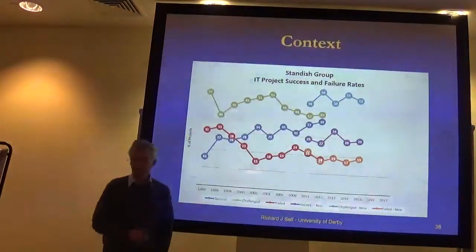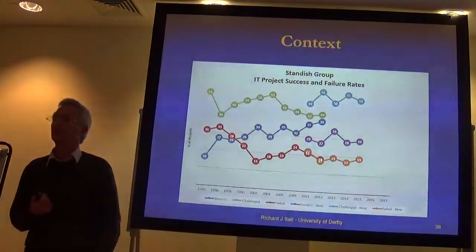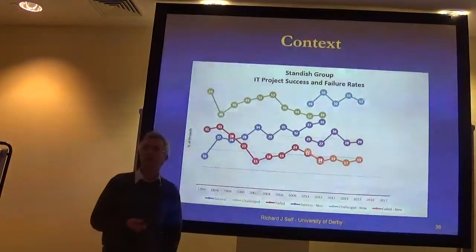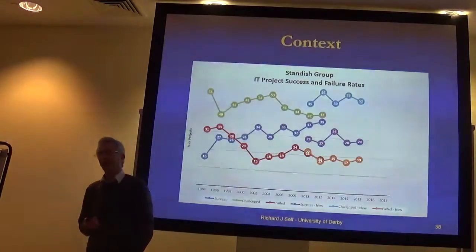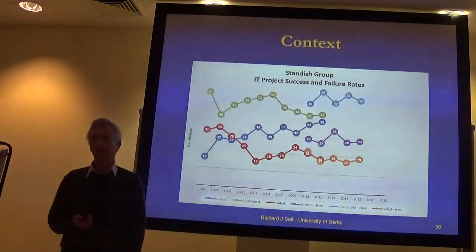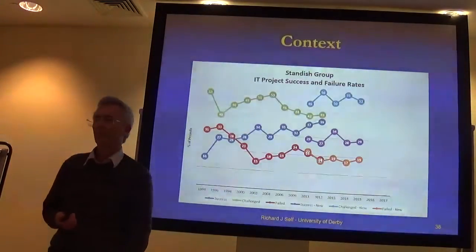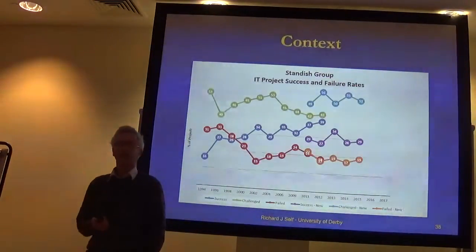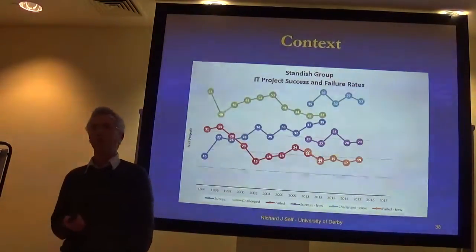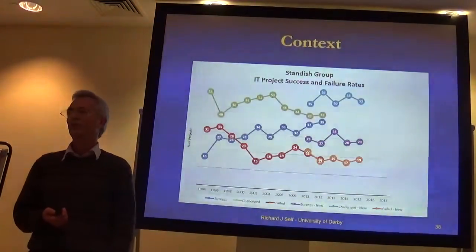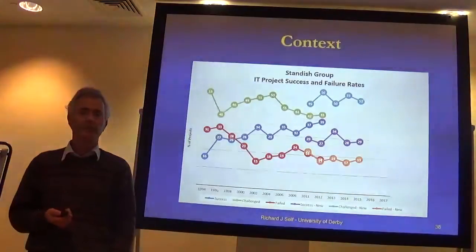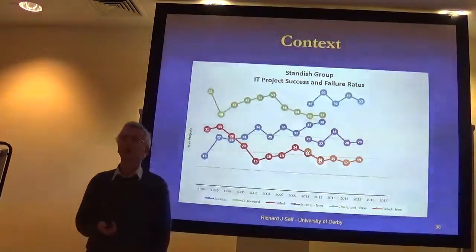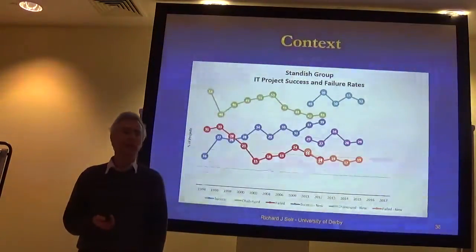There are some interesting questions about the consequences of those failures and the lack of value. If we think back to last year, our failures in security led to the better part of a billion sets of personal ID being stolen. The general metric is every single one of those costs the economy $200 US, so that's $200 billion cost per year, purely on data security at the most trivial level.